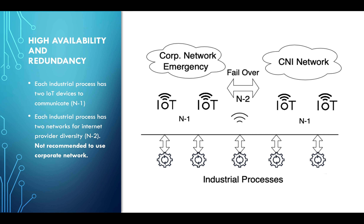For N-2 redundancy, we can use 4G or 5G and route traffic directly to the cloud or a DR location. Again, the corporate network should never be used — we must maintain strict separation between the CNI network and the corporate network.